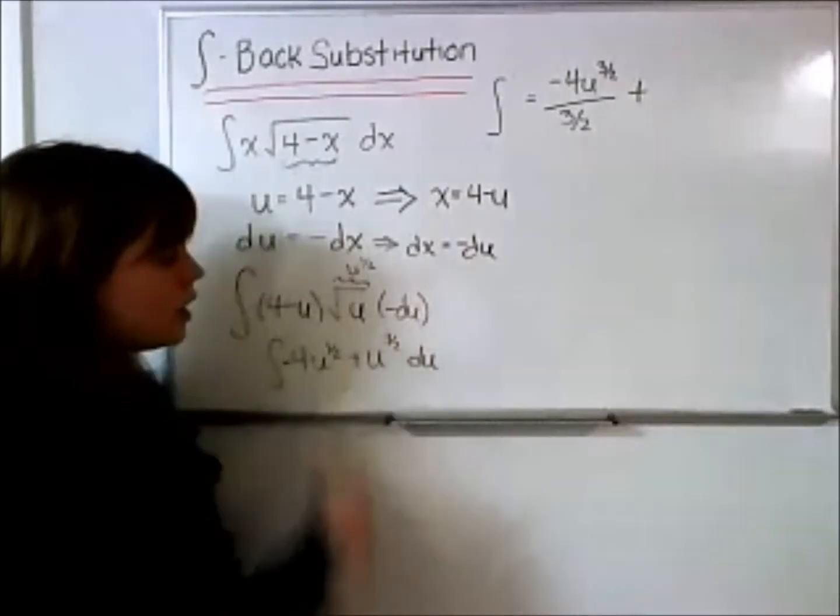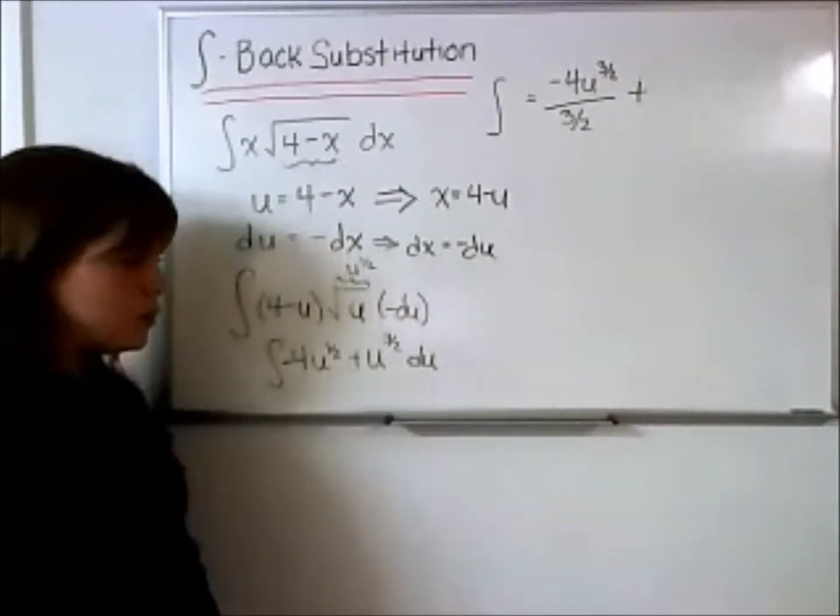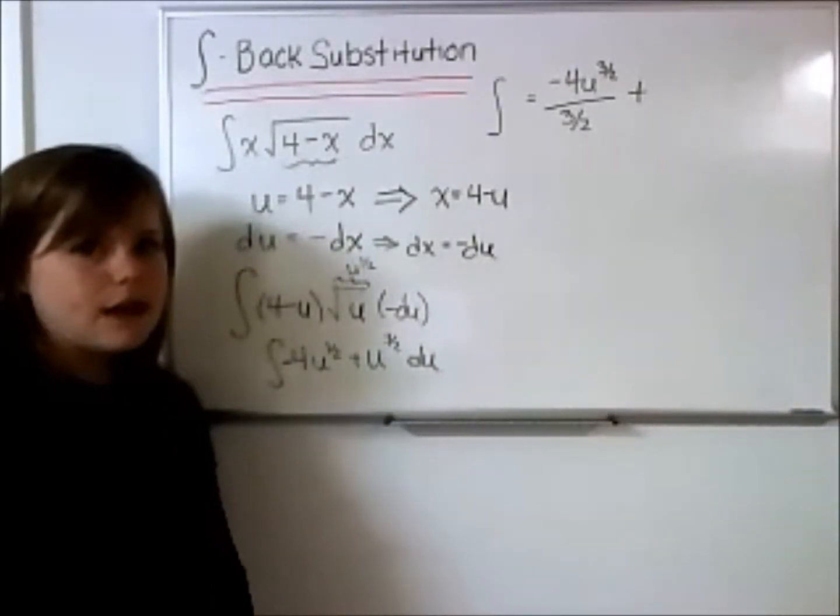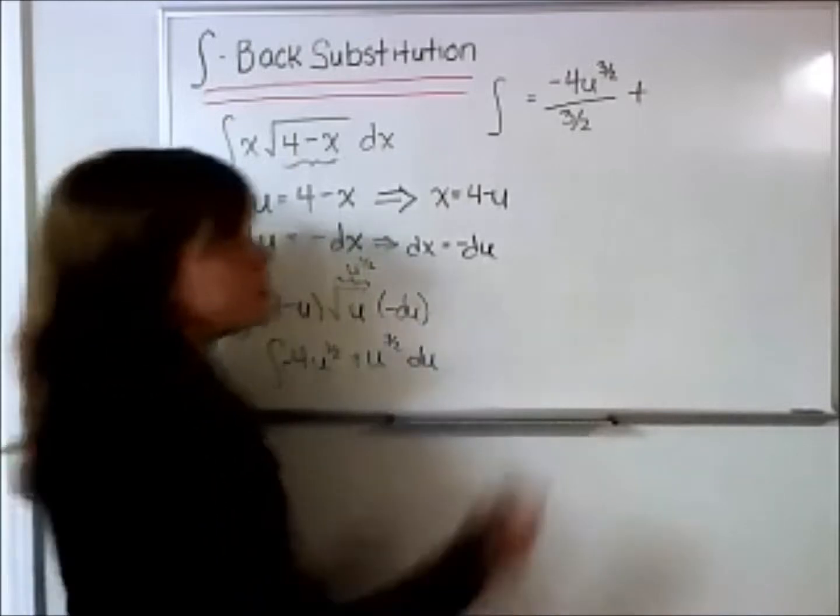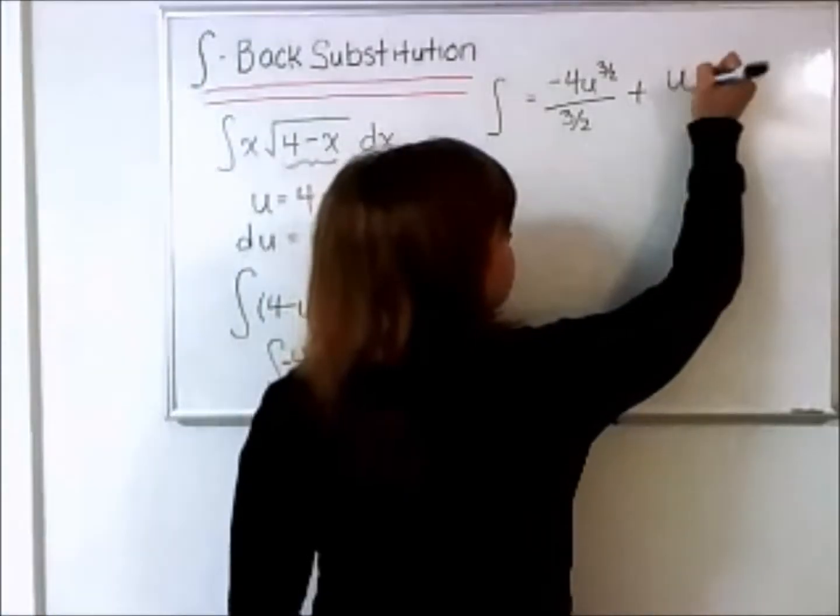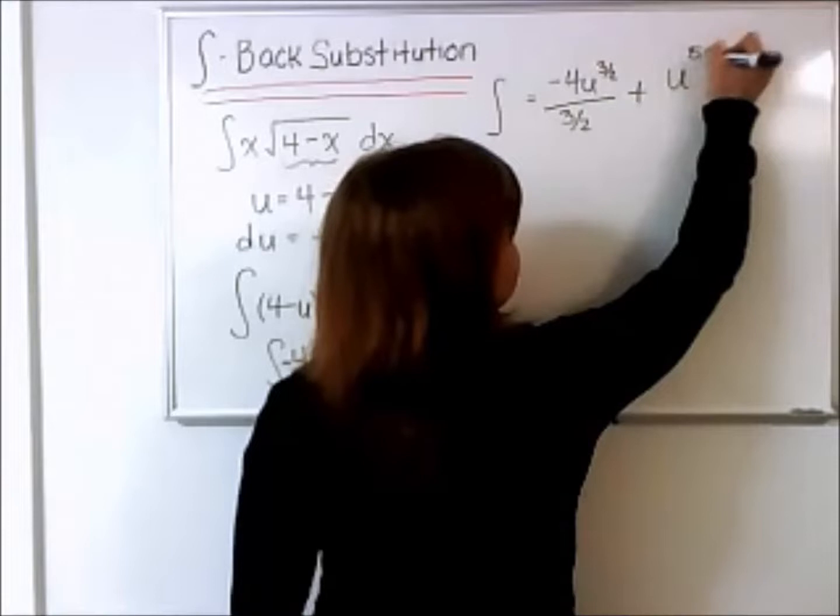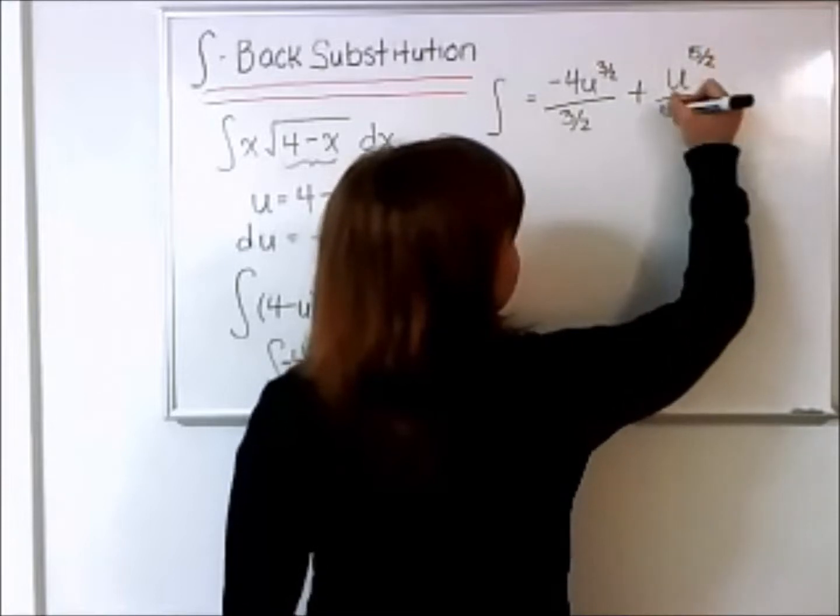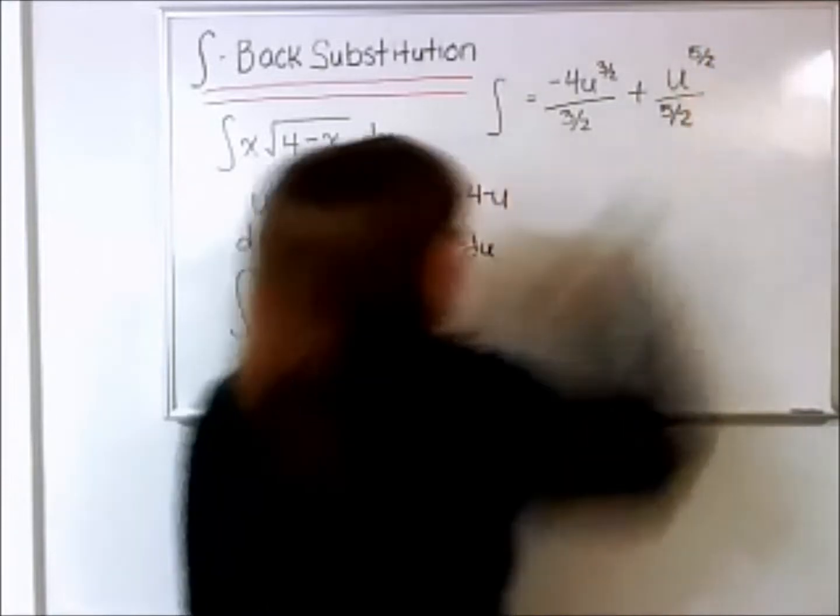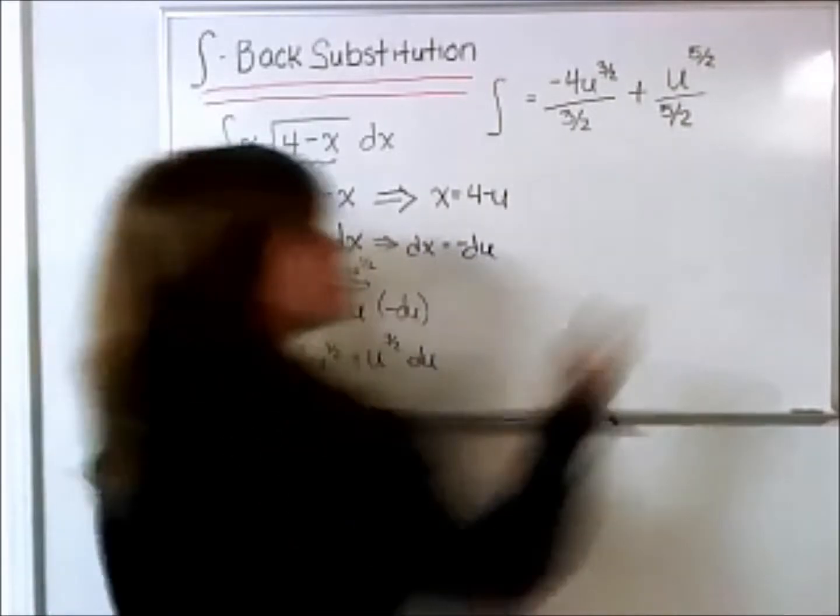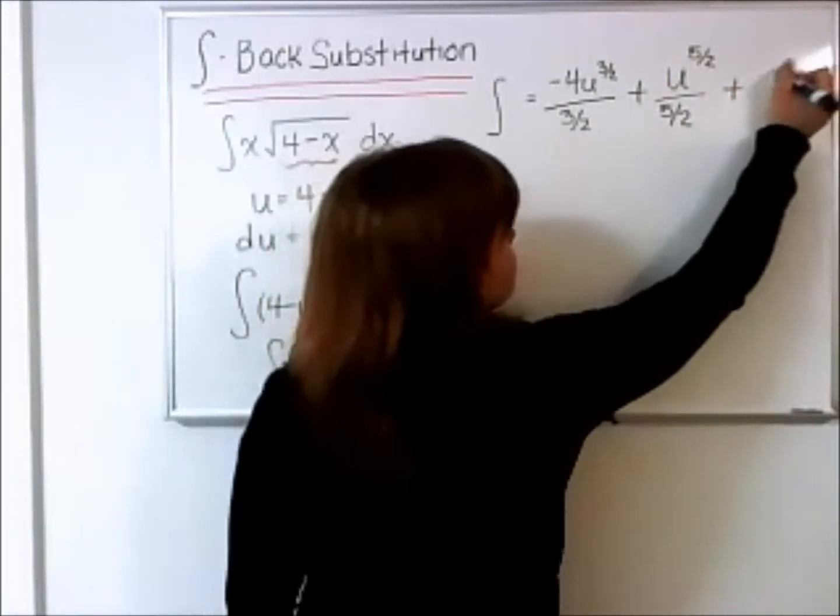And adding to that, the antiderivatives of u to the 3 halves is u to the 5 halves, all over 5 halves. And because this is an indefinite integral, we can't forget to add our constant, c.